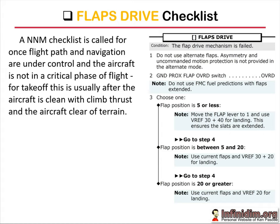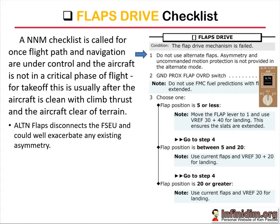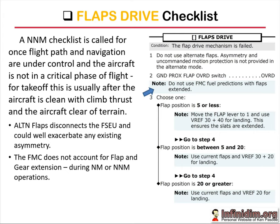With either the flaps drive or the slats drive failure, the aircraft probably isn't going anywhere far — it's a pretty unusual situation that would require an extensive diversion at this point. The selection of alternate flaps overrides the FSEU and could almost certainly exacerbate any asymmetry that may have developed or been prevented by the slats drive failure. However, the leading edge devices — that is, the slats — are available, as evidenced by the checklist note advising you to move the flap lever to one in the case where the flaps are five or less. The FMC fuel and time prediction doesn't account for a flight with flap extended during the non-normal — in fact, FMC fuel prediction doesn't account for flap or gear extended at any time, normal or non-normal.